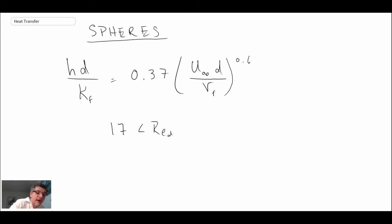So again, be careful to make sure that it applies over the range. And for this one, it turns out that the properties are being evaluated at the film temperature, which we saw earlier. T film was T infinity plus T wall divided by two. And so anyways, that's a correlation that exists for a sphere.